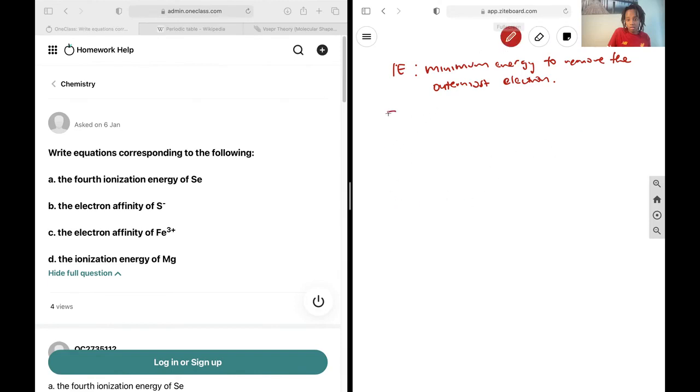Additionally, we have the electron affinity, and that is defined as the energy which is going to be released when an electron is added to an atom or molecule in gaseous phase.